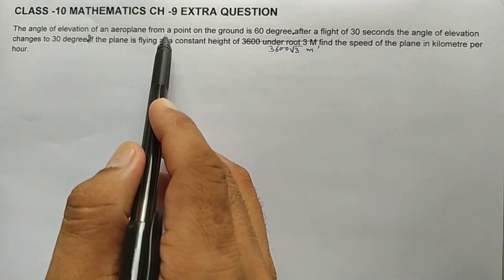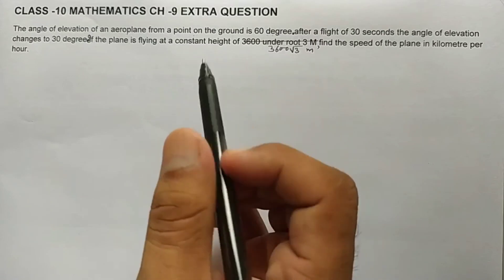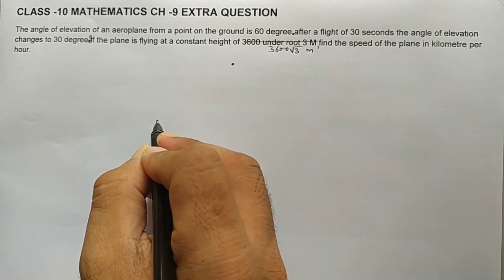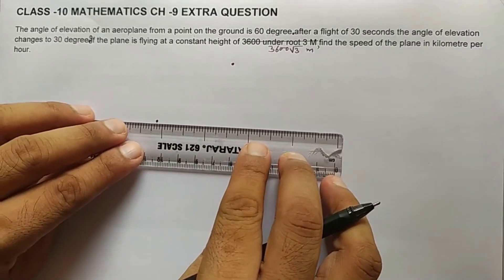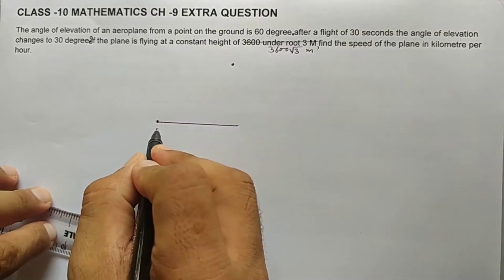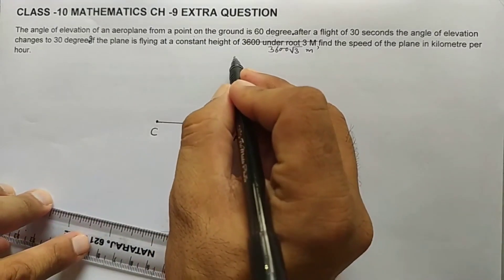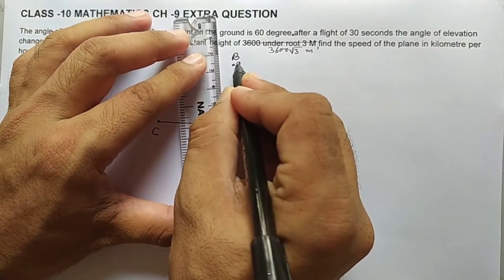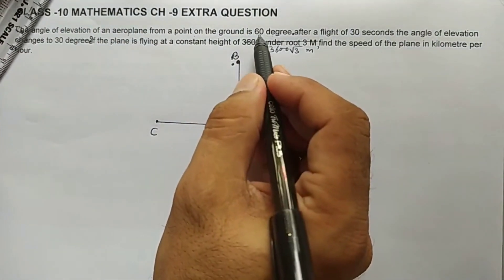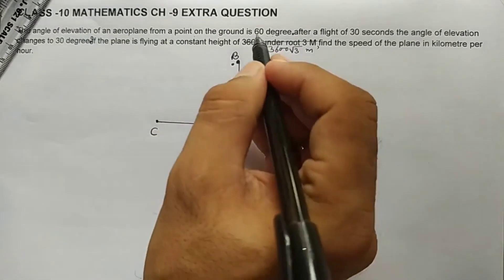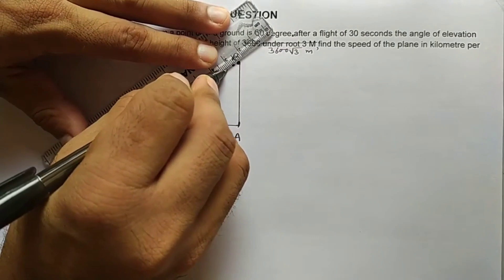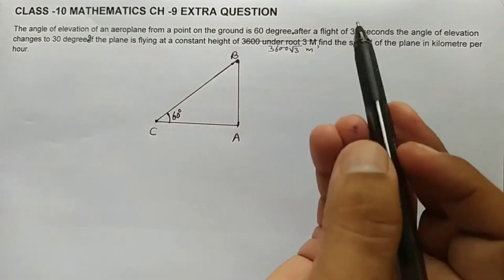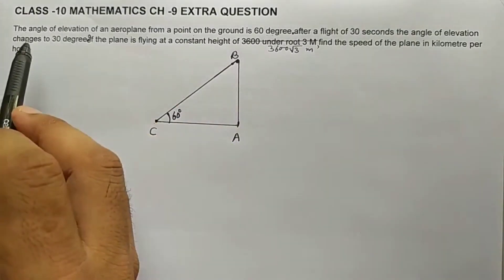Let's understand the question. The angle of elevation of an aeroplane from a point on the ground is 60 degrees. Suppose this is the aeroplane and this is the point on the ground — point C. The aeroplane is at point B. The angle of elevation from point C is 60 degrees; the ray of sight and the horizontal make this 60 degree angle.